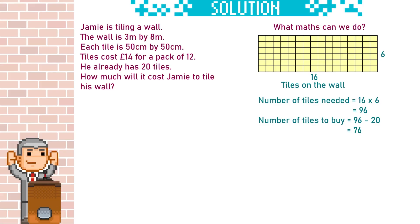The tiles are sold in packs of 12, so we need to figure out how many packs we need. We do 76 divided by 12, which gives 6.3 recurring. You can't walk into the shop and ask for a third of a pack — they do not like that. You might be tempted to round down because 6.3 rounds down to 6, but we don't round down with these types of questions. If we round down there will be a patch on the wall without any tiles. So with these questions we always round up.